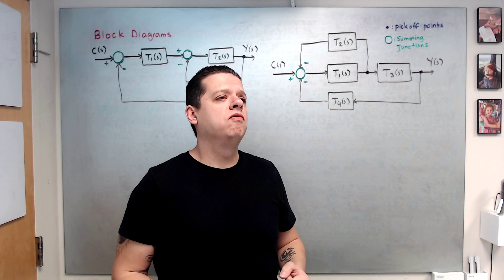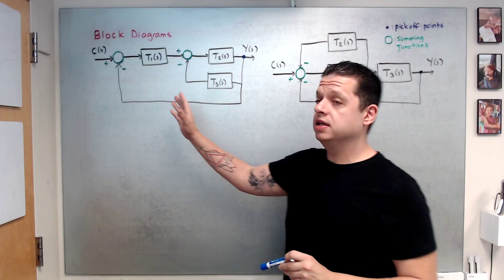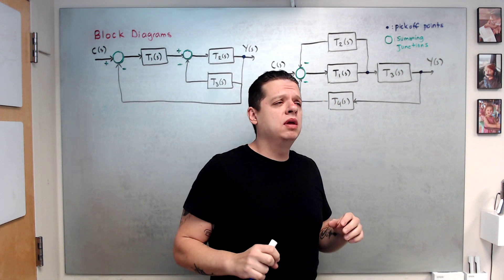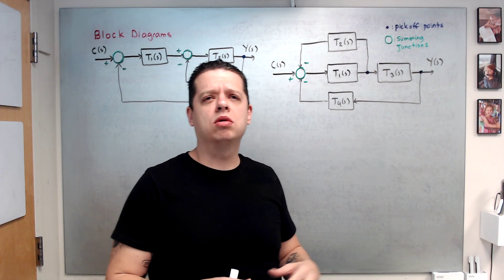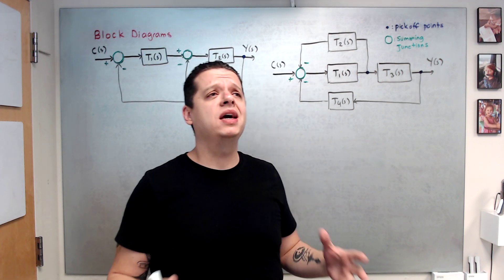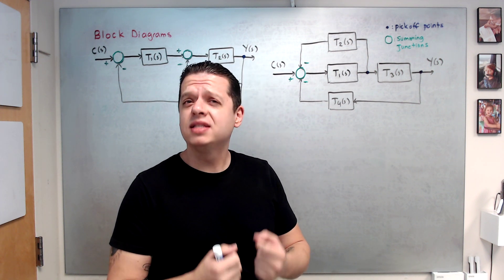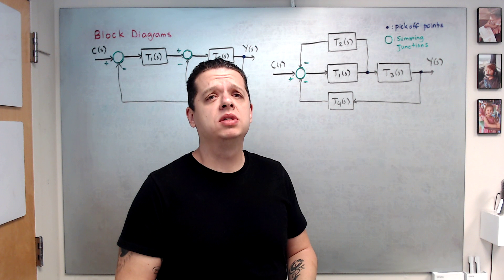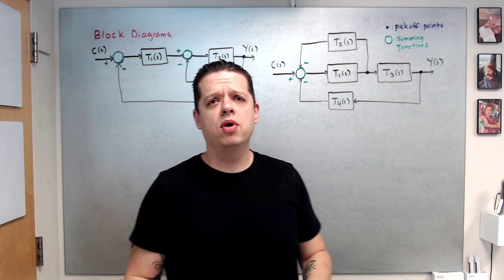When you have a block diagram you would like to find the closed-loop system transfer function. Today I have two examples: an easy example and a slightly harder example. Different books cover block diagrams in different ways — you can do block diagram reductions — but these days if you have a complicated block diagram, MATLAB can find the closed-loop system transfer function for you.